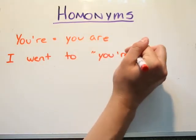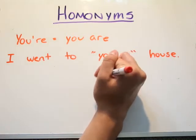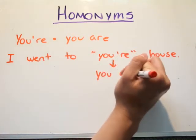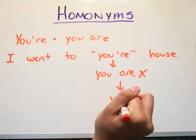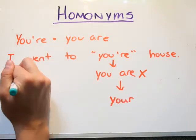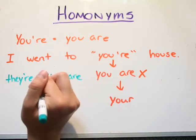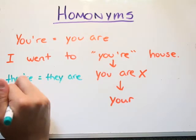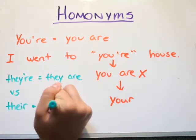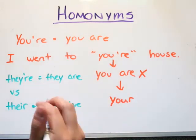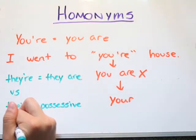Let's start with words including an apostrophe. 'You're' with an apostrophe is a contraction, the equivalent of 'you are.' Try separating it when you write it to make sure it makes sense. If the sentence reads 'I went to you are house,' then you have used the wrong 'your.'